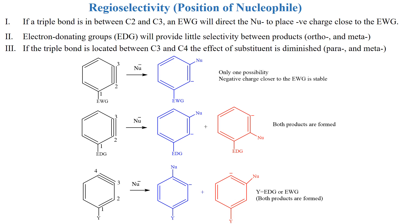Next, we will see where the nucleophile will be attached to the benzyne if there are more than one possibility. In the first case, the triple bond is located between C2 and C3. The negative charge will be ortho to the electron-withdrawing group and the nucleophile will be at the meta position, because the closer the negative charge to the electron-withdrawing group, the more the stability. In the second case, the triple bond is between C2 and C3 and the substituent is an electron-donating group; there is little selectivity and the nucleophile can be added at both positions. In the third case, the triple bond is between C3 and C4, and there is no significant effect of the substituent — it can be electron-donating or electron-withdrawing, and both products are formed.